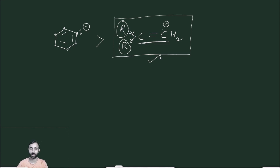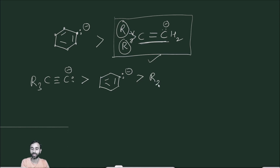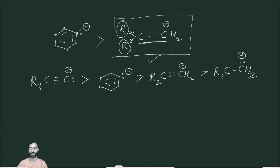So the stability order is clear: the alkyne carbanion is the most stable (most electronegative sp carbon), then the benzene ring carbanion, then the alkene carbanion, and the alkane carbanion is the least stable. This is the order of stability.